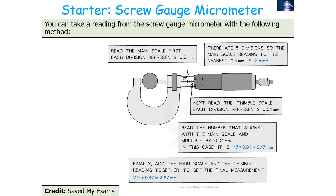To take a reading from a screw gauge micrometer: the main scale has divisions each representing 0.5 millimetres, and the thimble scale has divisions each representing 0.01 millimetres. You count how many divisions you have on the main scale, then read the value on the thimble scale, and add the two together — remembering the thimble scale is in units of 0.01 millimetres rather than 0.5 millimetres.